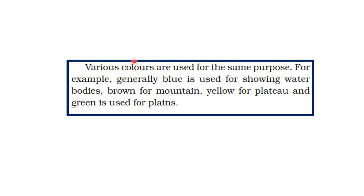Dark brown means the mountain is very high, or if a mountain is snow-capped, it is shown by using white color. In the same way, different shades of yellow also tell about the height and undulating height of plateaus.